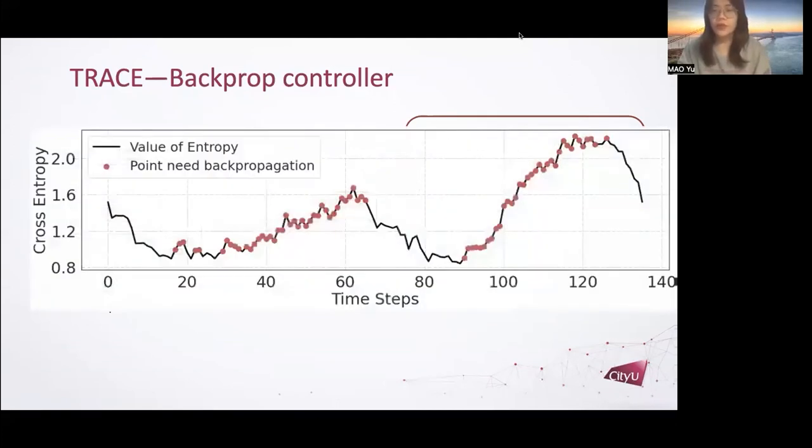This figure shows a small segment of entropy change, and the red point is the batch that backprop controller decided to do backpropagation. The model only updates its parameter when the entropy is growing. This can avoid a considerable amount of backpropagation and can further accelerate compression speed.